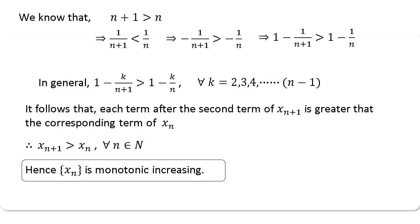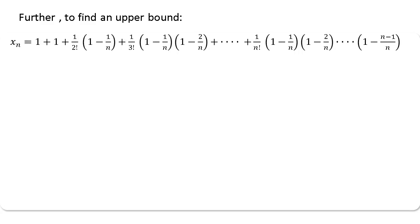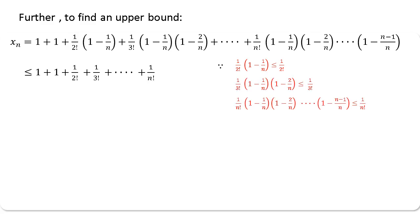Once we got this result, the next thing is to verify whether this sequence is bounded above — whether an upper bound exists. Looking at the simplified form of xn, the equality becomes an inequality (less than or equal to). This is because the third term of xn in the first result is less than or equal to 1/2!, which is the third term of the new result. Similarly, the corresponding terms satisfy this inequality.